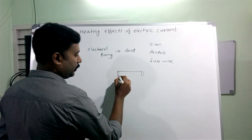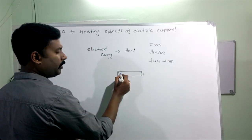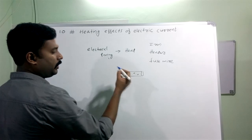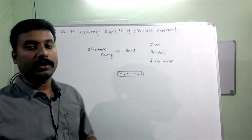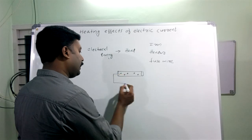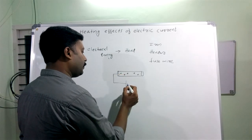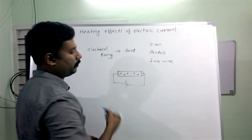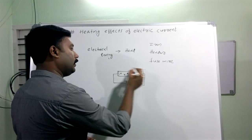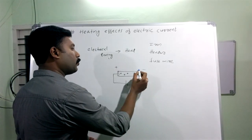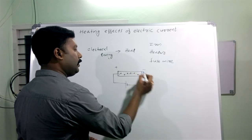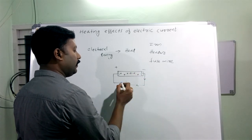In a conductor, we have free electrons. These free electrons drift when current flows. There are positive and negative charges involved in this process.